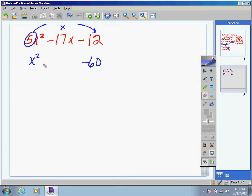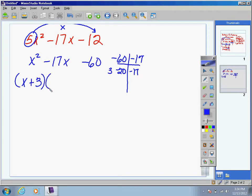x squared minus 17x minus 60. Now with this trinomial, we can use the factor sum method. What are the factors of negative 60 that add to negative 17? Positive 3 and negative 20. Now write your binomials: x plus 3 and x minus 20.